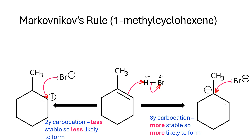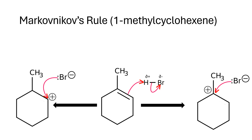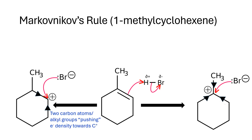On the right-hand side, a tertiary carbocation — more stable, so more likely to form. What's happening is that in each carbocation, any nearby carbon atoms will tend to push electron density towards the carbon that carries the positive charge. There are two carbon atoms or alkyl groups pushing electron density towards C+ on the left, but three carbon atoms or alkyl groups pushing electron density towards C+ on the right.